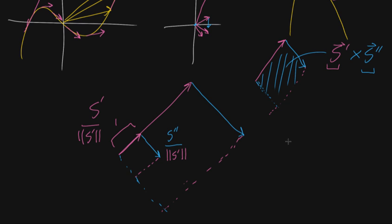So this cross product, if we take the cross product between s prime normalized, and s double prime scaled down by that same value that's still s prime, so it's not normalized. This is just scaled down by s prime. This here is a more pure measurement of how perpendicular the second derivative vector is to the first.